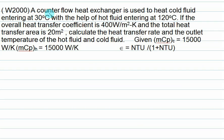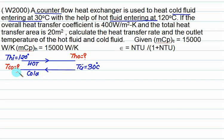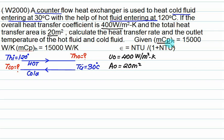For the second question, a counter flow heat exchanger where both fluids flow in opposite directions. Cold fluid enters at 30 degrees Celsius and hot fluid enters at 120 degrees Celsius. Both outlet temperatures are unknown. U0 is given as 400 watts per meter squared kelvin, area A is 20 square meters. The product m-dot times Cpc for cold fluid (Cc) equals m-dot times Cph for hot fluid (Ch) equals 15,000. First job is to calculate NTU.